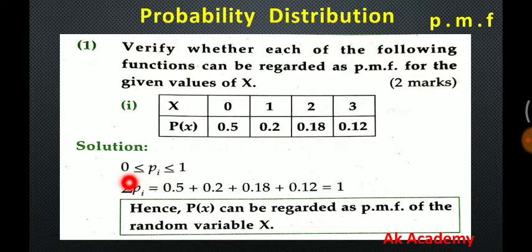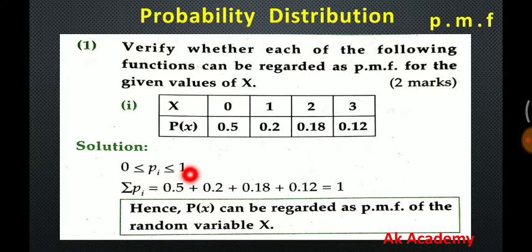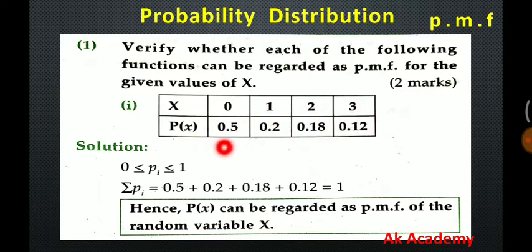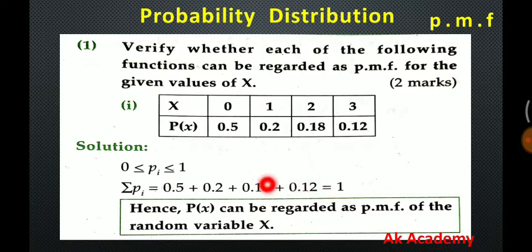Probability is greater than or equal to 0 and less than or equal to 1. In my previous video I said that probability can never be negative — never less than 0 — and never greater than 1. For PMF, the total of all probabilities must equal 1. So let's verify: 0.5 plus 0.2 plus 0.18 plus 0.12 equals 1. It is equals to 1, so it is a PMF. Hence P(X) can be regarded as a PMF of a random variable X.